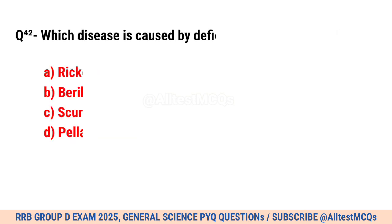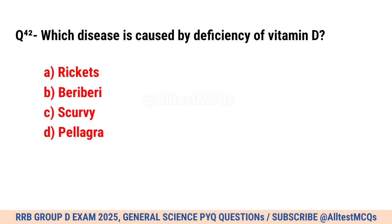Question No. 42. Which disease is caused by deficiency of vitamin D? Right option is A. Rickets.